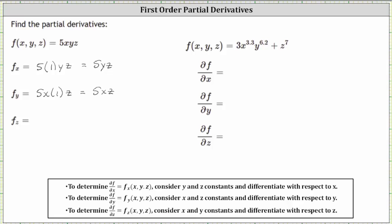To find the partial of f with respect to z, we now treat x and y as constants and differentiate with respect to z. Therefore, the partial of f with respect to z is equal to 5xy times the derivative of z with respect to z, which is one, giving us a partial of f with respect to z of 5xy.